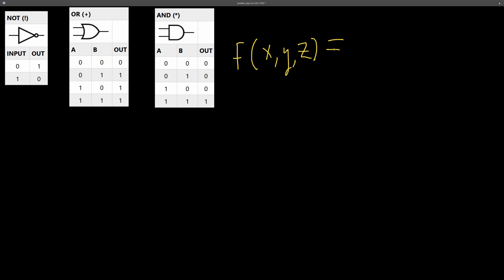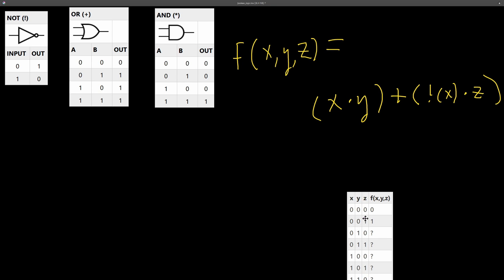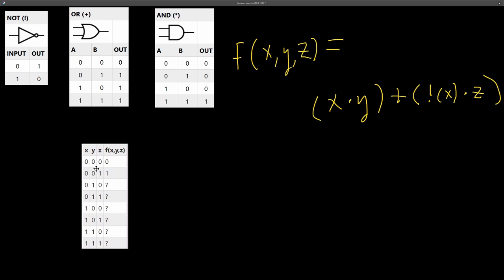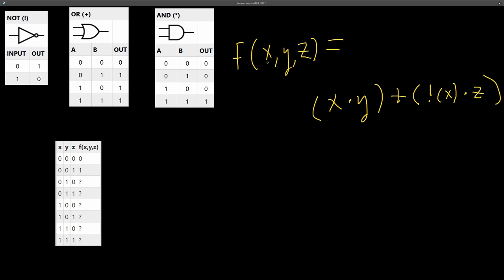Now let's move to using functions instead of concrete values. Since we're dealing with binary values, we have the luxury of knowing every possible input and output to a boolean function. We can write them out in a table called a truth table. With three inputs, there are eight possible unique input combinations and eight possible outputs.